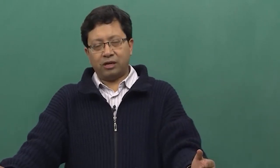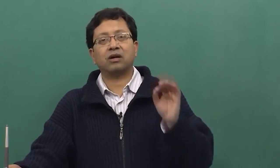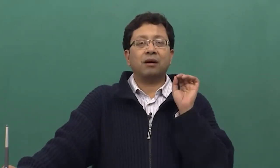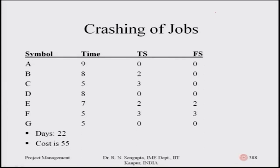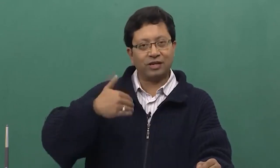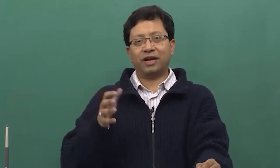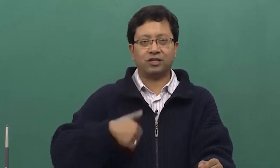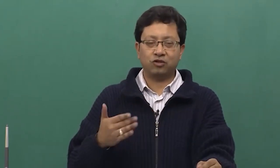The relationship between total slack and free slack is known to us. Based on the rule that critical path activities have zero total slack and zero free slack, we can identify the critical path. I will not jump immediately to naming the path, but first concentrate on the total number of days and the overall cost. The total number of days is twenty-two.